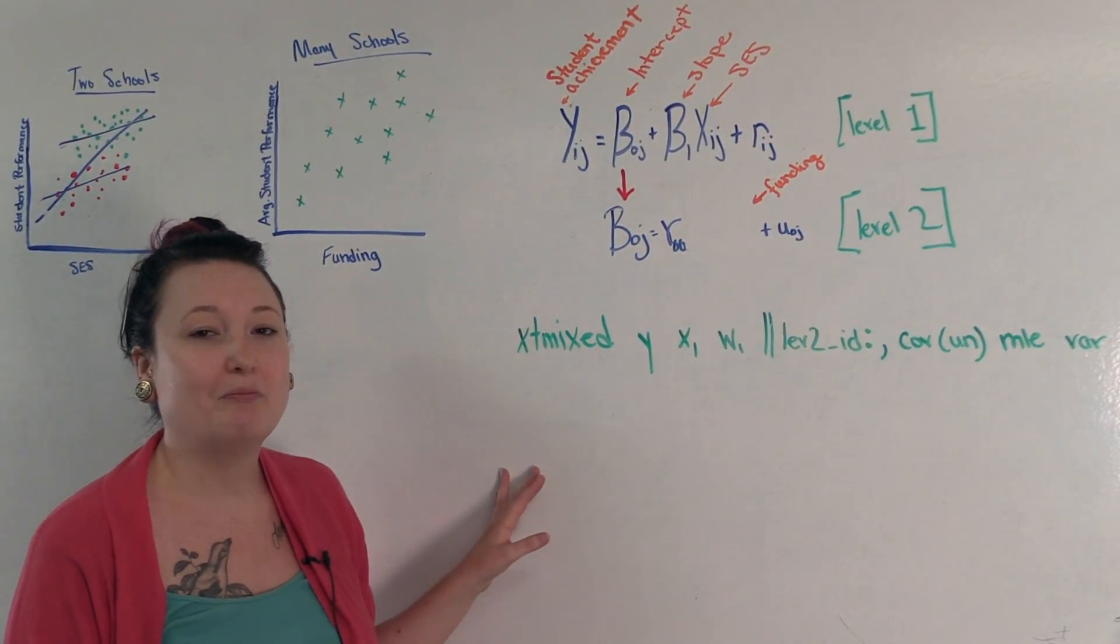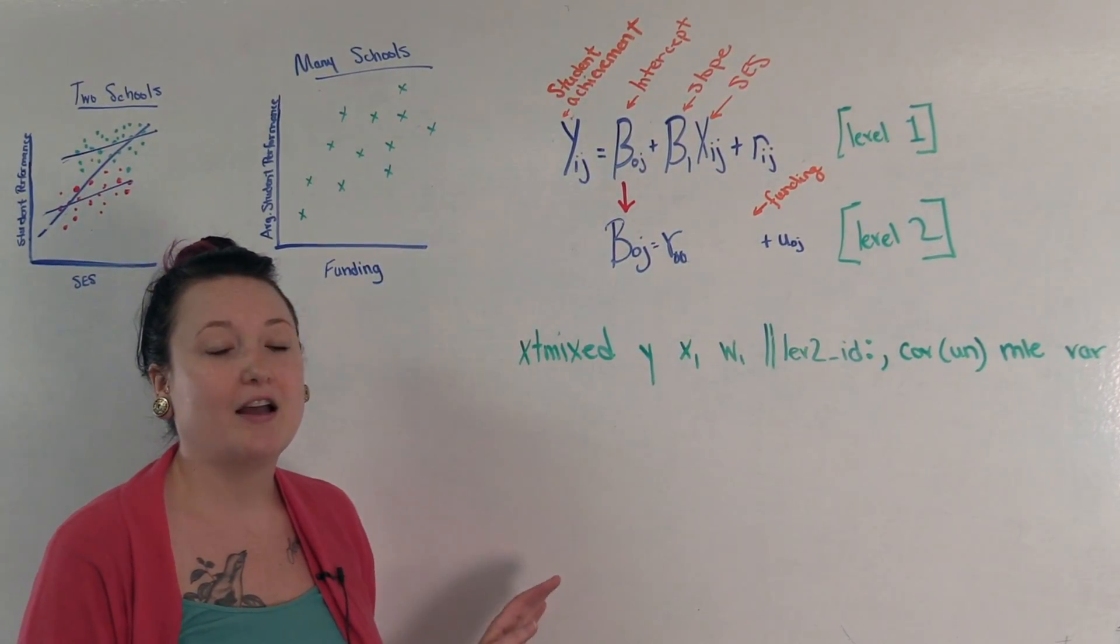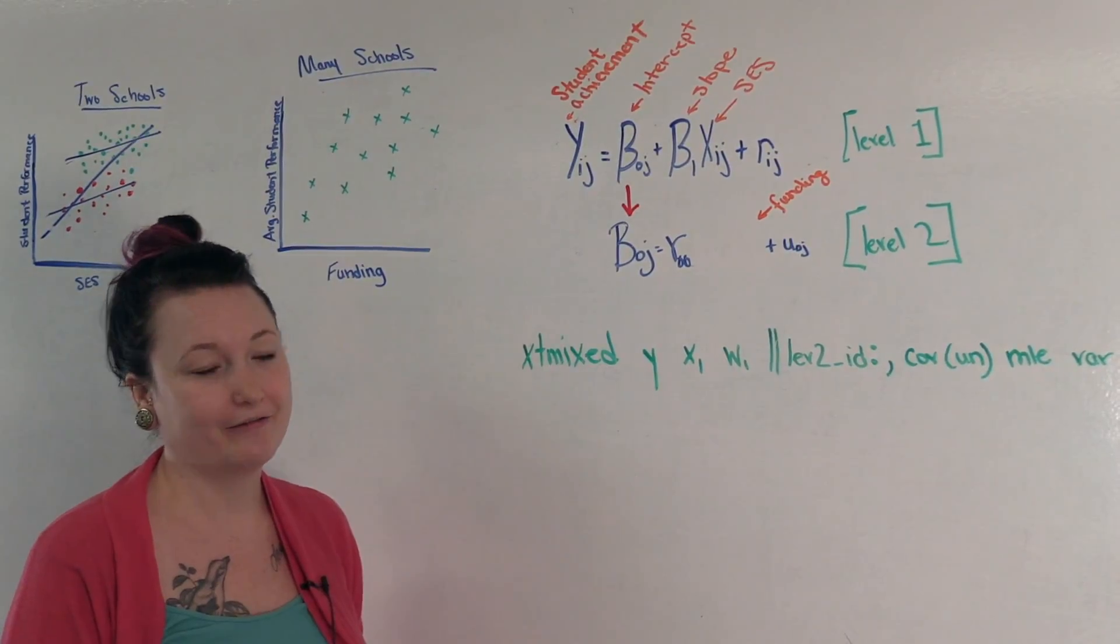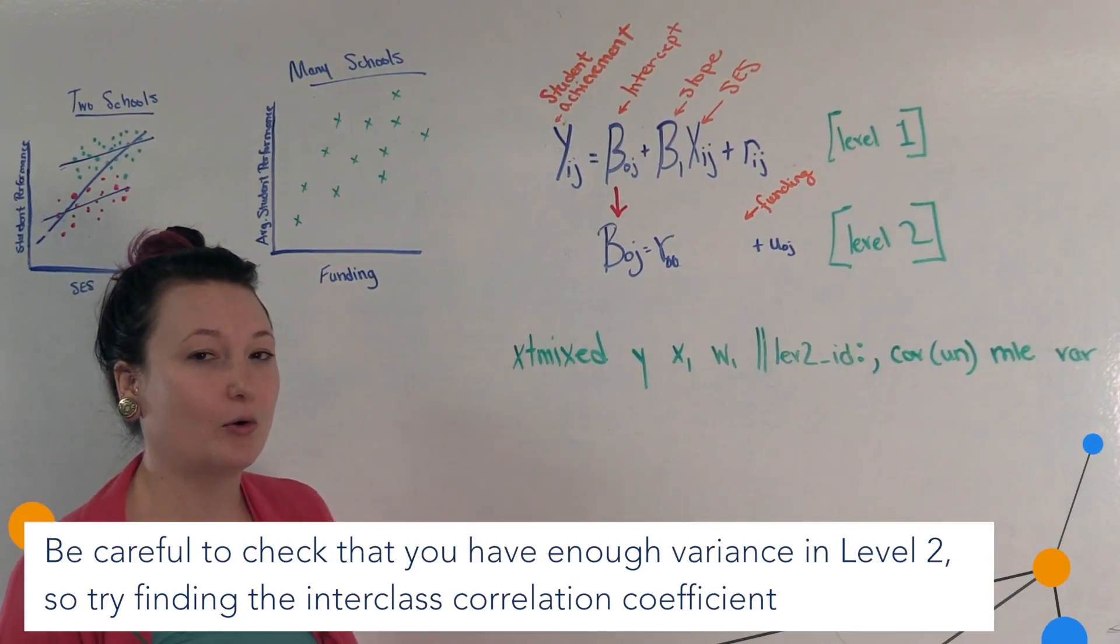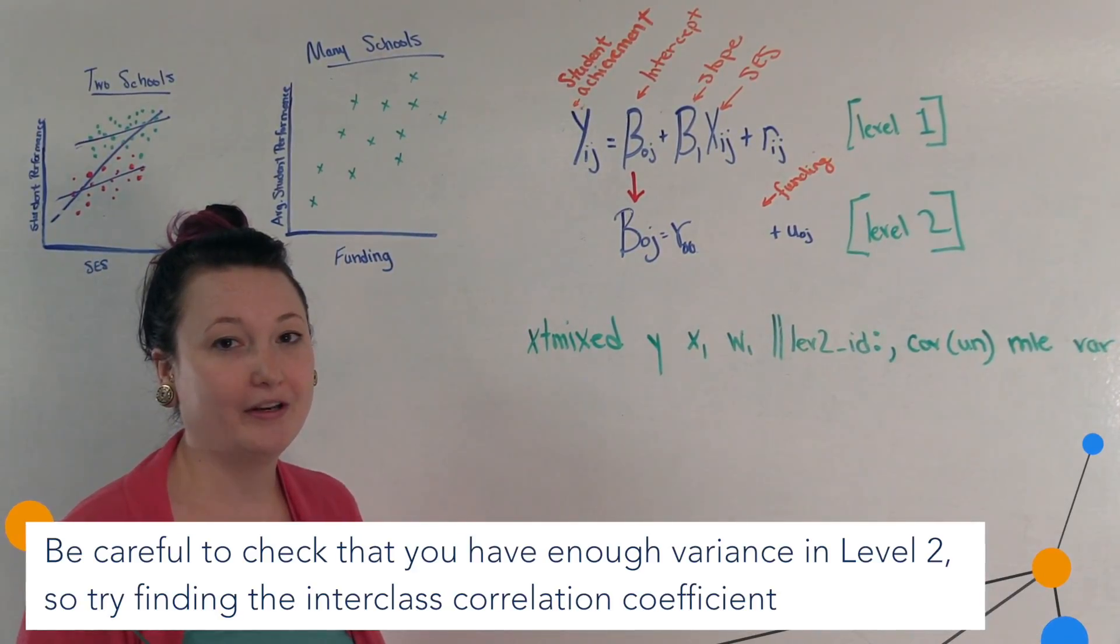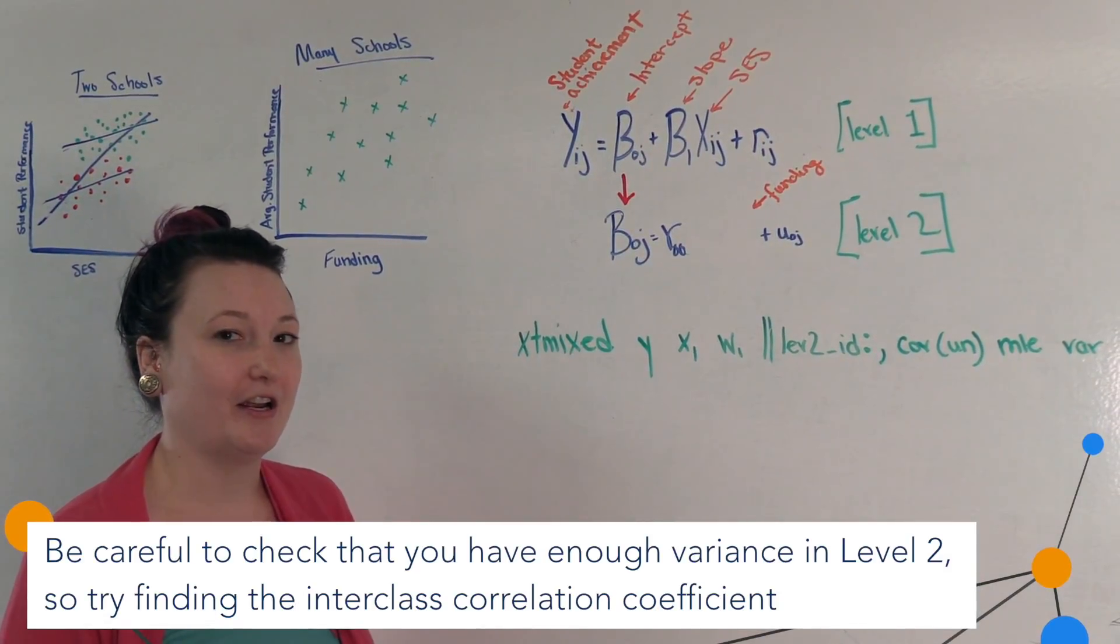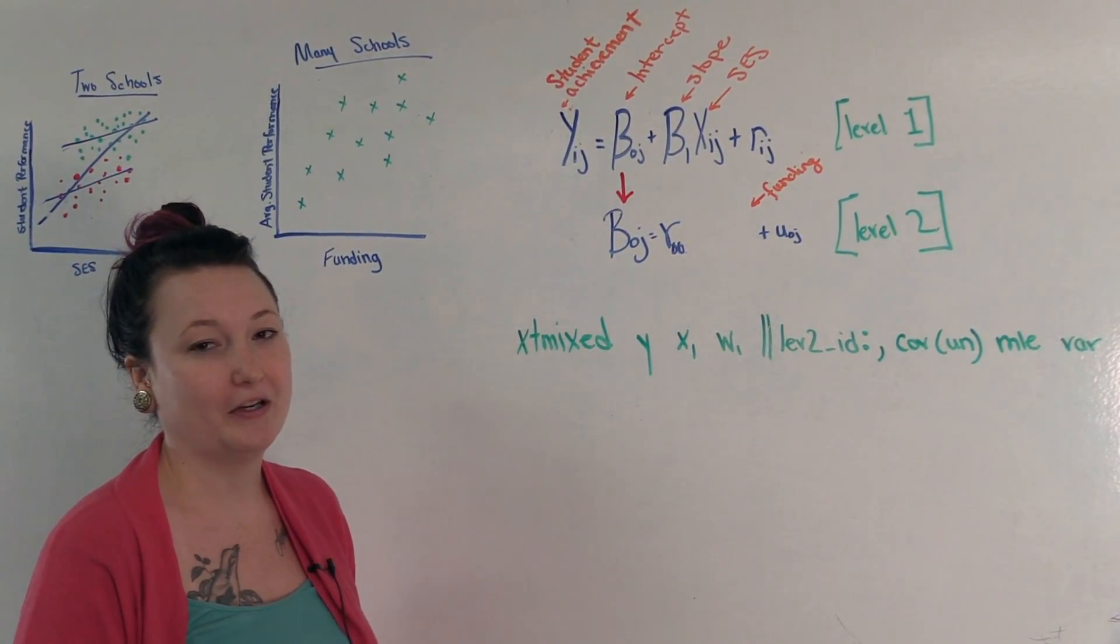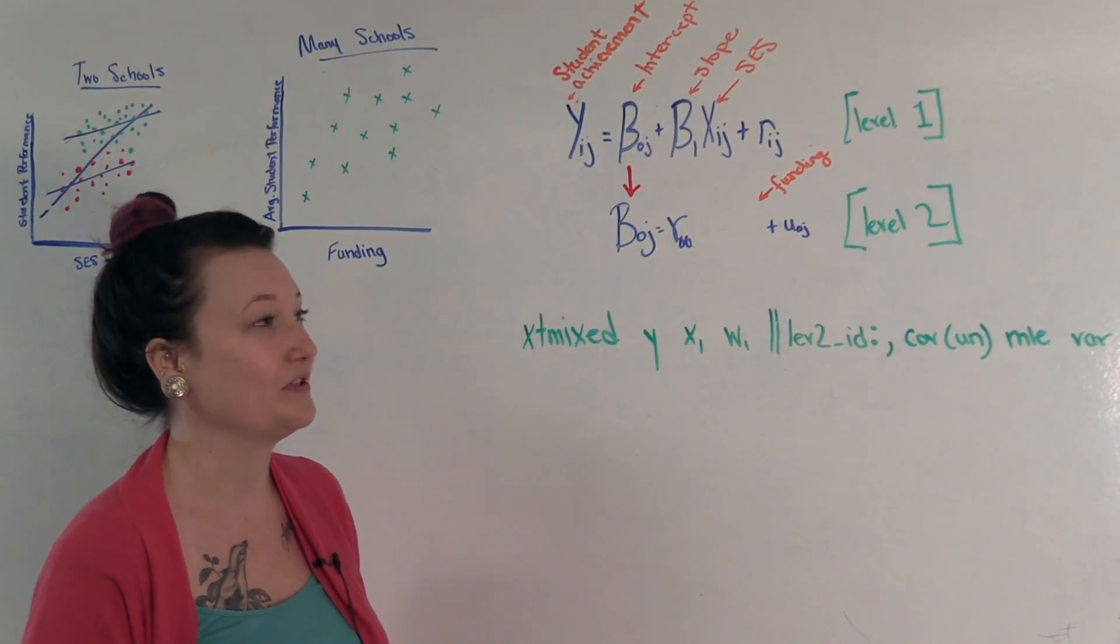However, it is important to keep in mind some of the caveats to using these data. One would be that you do want to make sure you have enough variation at level two to justify using these more complicated models. You can do this by calculating the inter-class correlation coefficient. It ranges from zero to one with it representing the percent of variation between groups. If there isn't a lot of variation between groups, then you can't justify using one of these models and you should use something much more simple.